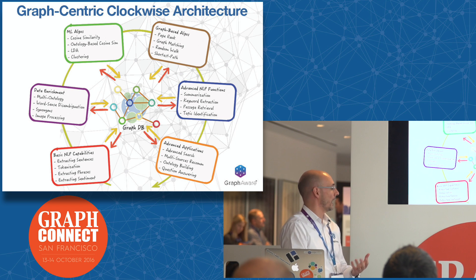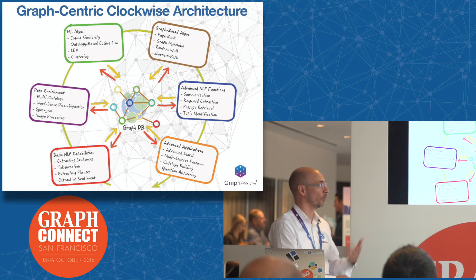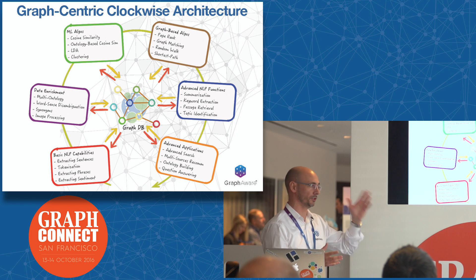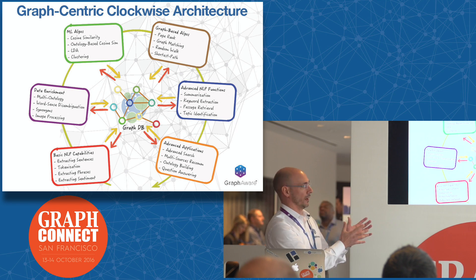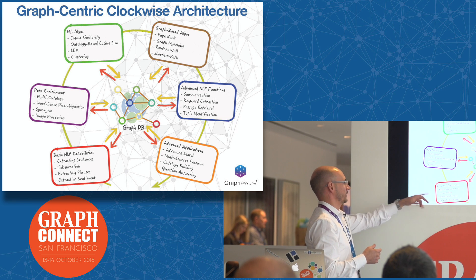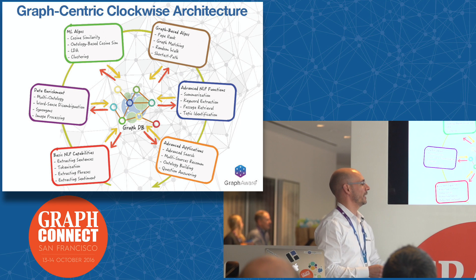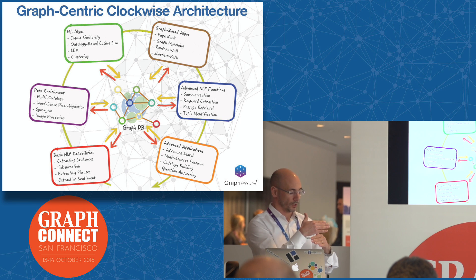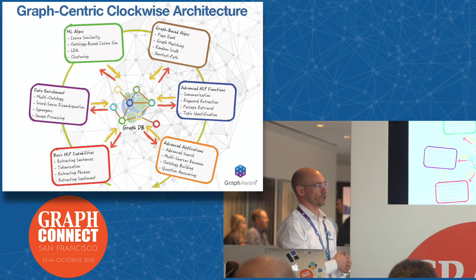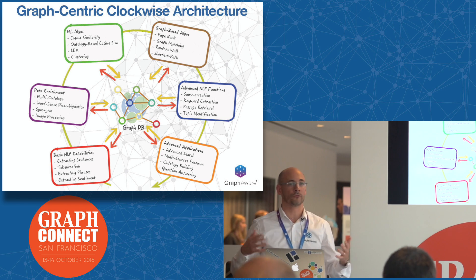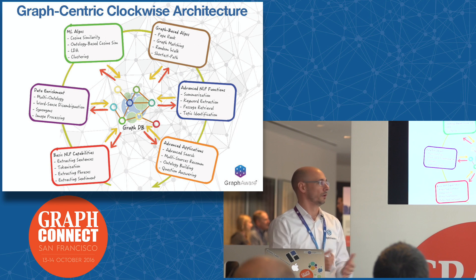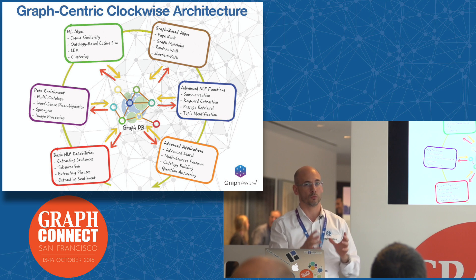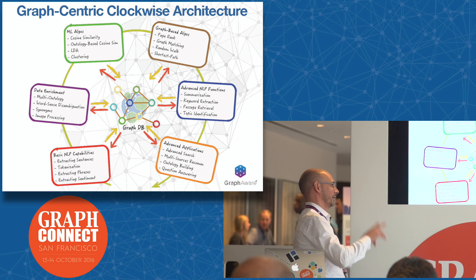Since the beginning, it appeared to be a really complex goal, so we started thinking about a new type of architecture in which we have the graph in the middle. We called this the graph-centric clockwise architecture, because in the center we have the graph and every single feature, every single functionality, every single module just reads data from the graph and, once the processing is complete, stores data back into the graph. In this way we can keep each single module and each single functionality loosely coupled to each other.